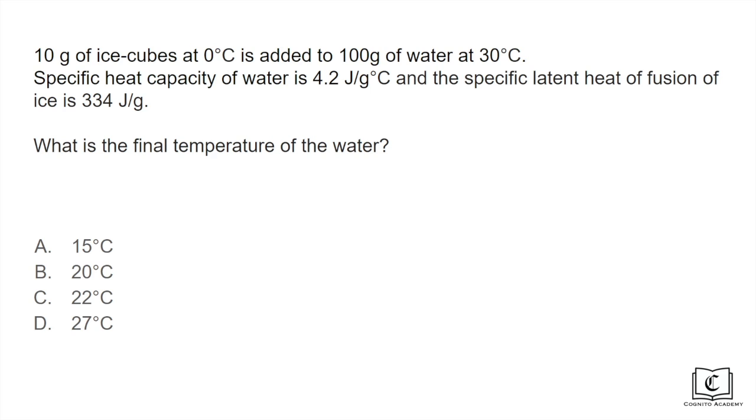First let's recap what the specific heat capacity of water and the specific latent heat of fusion of ice means. The specific heat capacity of water being 4.2 joules per gram per degree celsius means that in order to increase the temperature of 1 gram of water by 1 degree celsius we need 4.2 joules of heat.